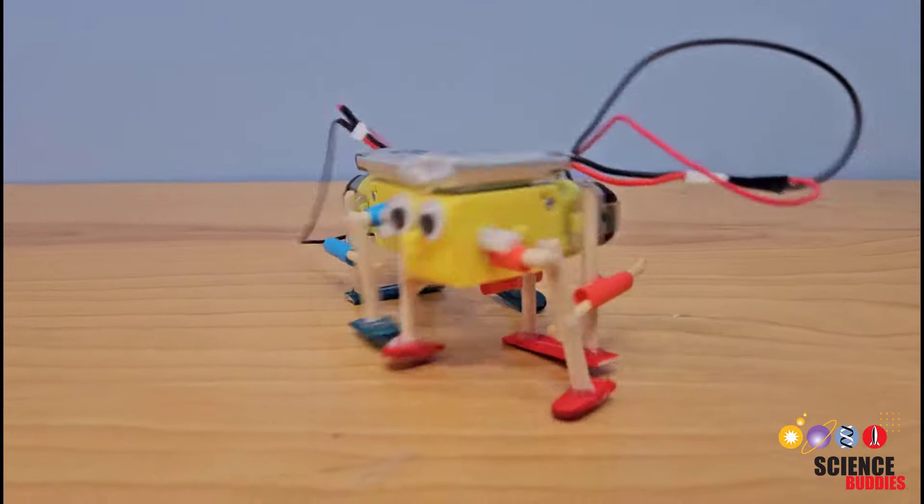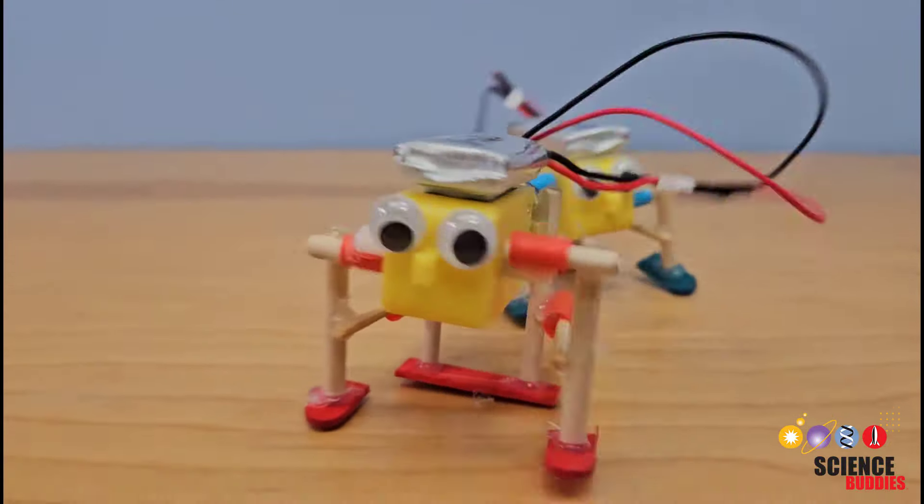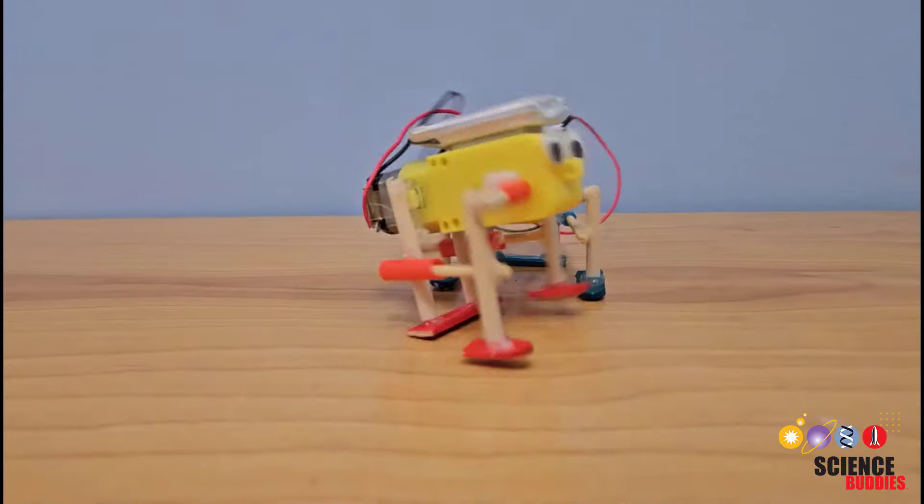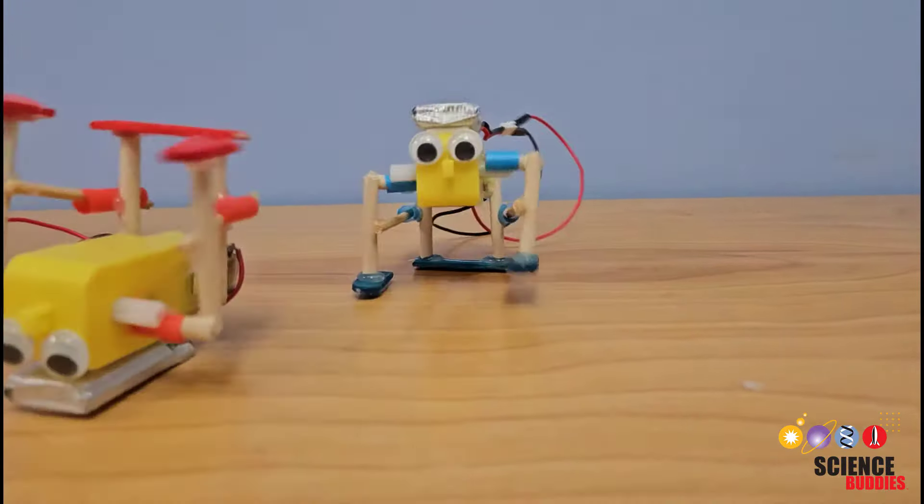In this video, I'll show you how to build this simple walking robot with a single DC motor. The only tools you'll need are scissors and a hot glue gun. No soldering iron or drill required.